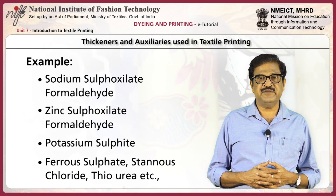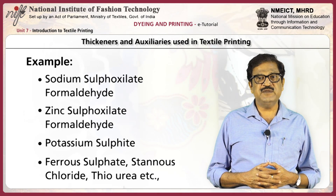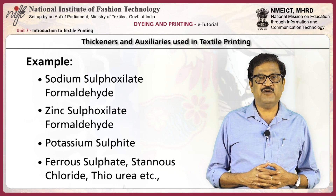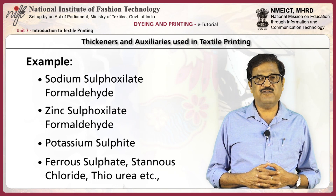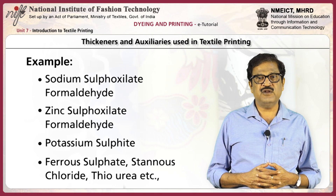Reducing agents are required for discharge and resist printing as discharge chemicals. Examples are sodium sulfoxylate formaldehyde, zinc sulfoxylate formaldehyde, potassium sulfite, ferrous sulfate, stannous chloride, thiourea, etc.